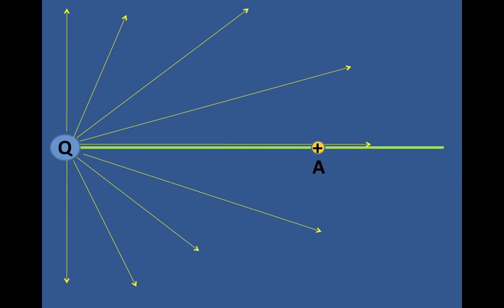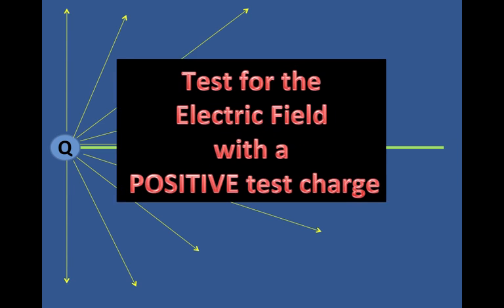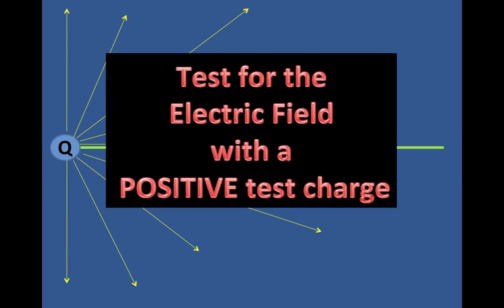Now if I were to put a little charge Q at point A, that's how I know there's a field there. How would I know if there's a field there? I can't see it. But I test for it by taking a little test charge, and if it feels a force, I know there is an electric field. We test for the electric field with a positive test charge.